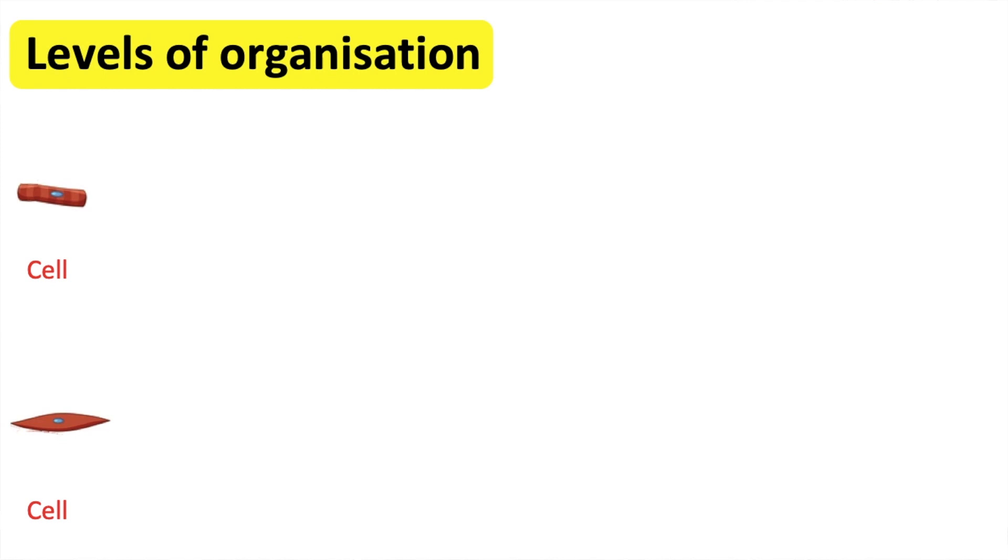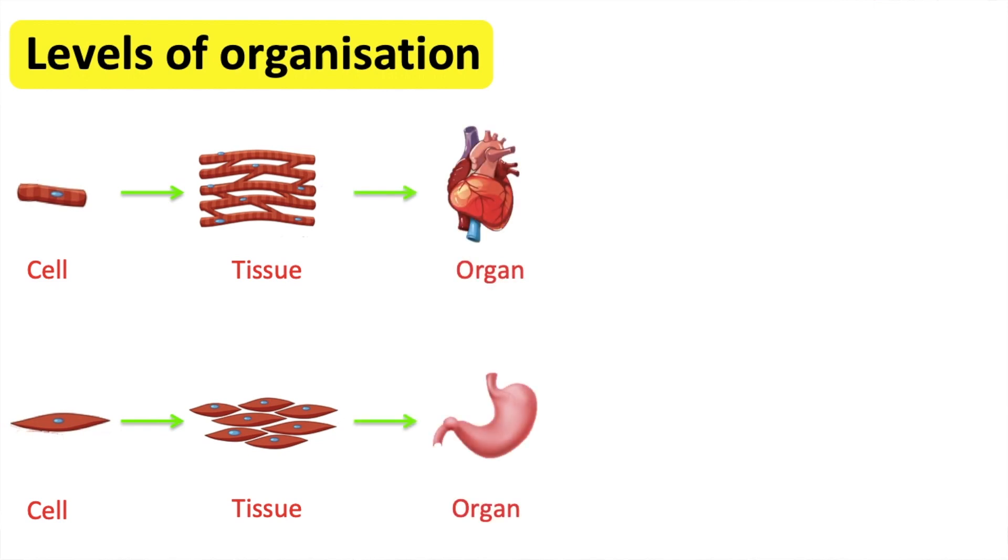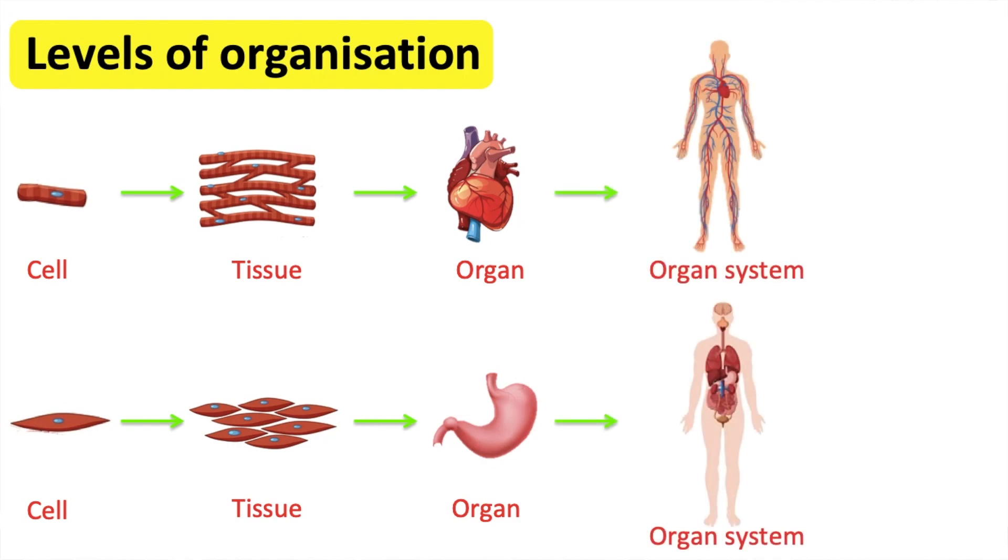Muscle cells work together to form muscle tissue. Muscle tissue then combine to form an organ. For example, the heart, the stomach or the liver. Different organs work together to make up systems. For example, the cardiovascular system, the muscular system, the digestive system. Different systems in the body then make up the organism.